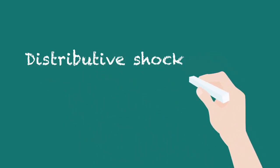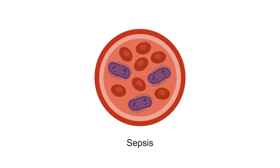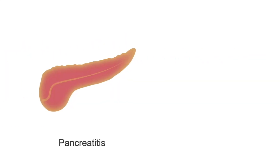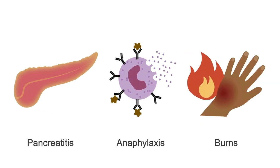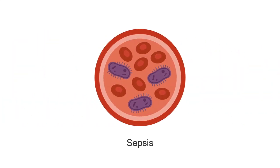Distributive shock is by far the most common type of shock, and the most common cause of distributive shock is sepsis, due to overwhelming infection. There are other causes, like pancreatitis, anaphylaxis from allergies, and burns, but since sepsis is the most common, let's use that as our example.